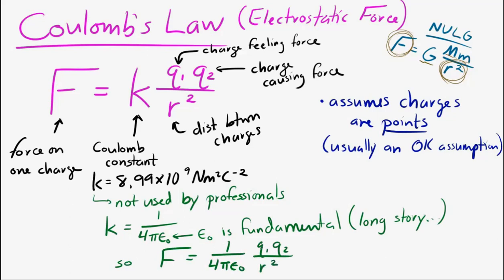Epsilon naught, that constant, is called the permittivity of free space. We're not going to worry too much about the meaning of that. But epsilon naught is an important constant in the larger physics world. It's equal to 8.85 times 10 to the minus 12 Coulombs squared per Newton per square meter.